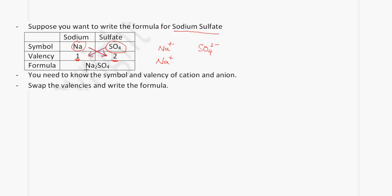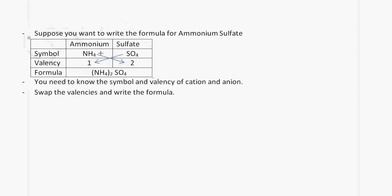If we wanted to write the formula for ammonium sulfate: ammonium is NH4, sulfate is SO4. The ammonium ion has a valency of 1 and sulfate has a valency of 2. We swap the valencies and end up with (NH4)2SO4. Because the ammonium ion has a plus 1 charge and sulfate has a negative 2 charge, we require 2 ammonium ions.